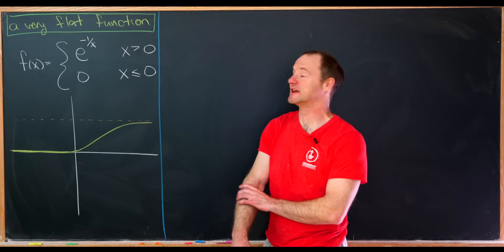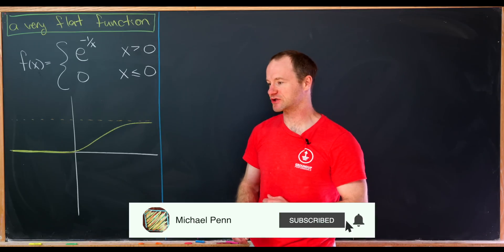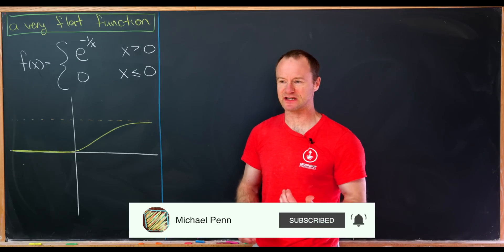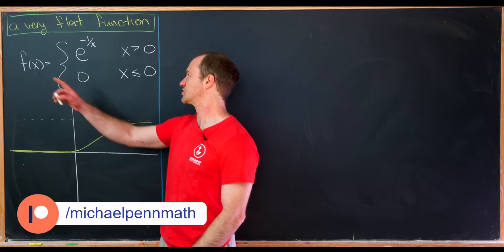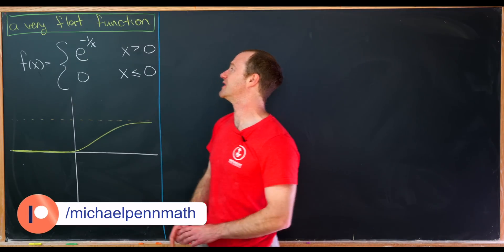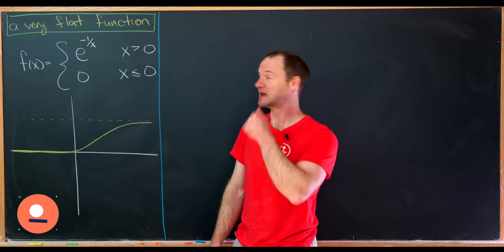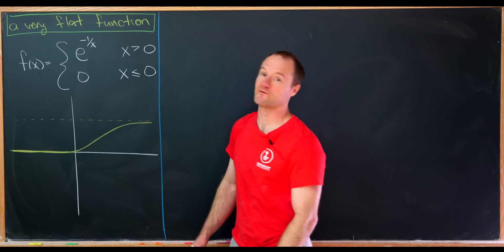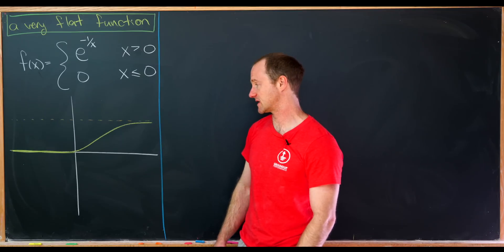Today we're going to look at a very interesting function, and that function has a piecewise definition, but even though it has a piecewise definition, we'll see that it is very nicely behaved. So this function is defined as e to the minus one over x for positive values of x and as zero for values of x that are non-positive, in other words, when x is less than or equal to zero.